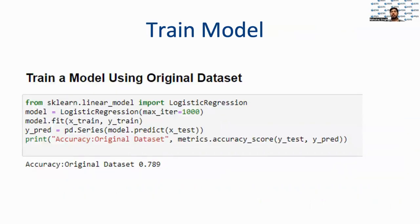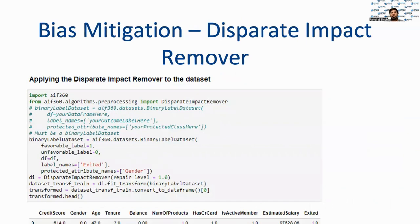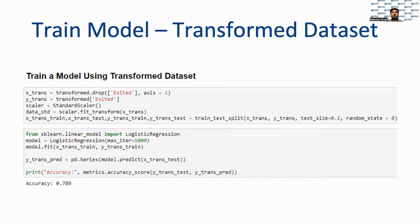The next step is to create a logistic regression model and compute its accuracy. We then apply the disparate impact remover algorithm to the dataset and recompute the accuracy and the updated disparate impact ratio. After applying the disparate impact remover algorithm, we see that the accuracy is approximately 79%, which is similar to what we achieved on the original dataset, showing that increasing fairness did not degrade the model's prediction power.